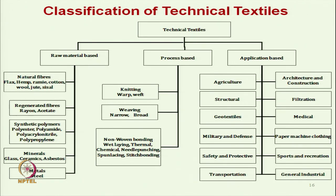Coming to the classification of technical textiles — broadly they are classified in 3 areas: based on raw material, based on manufacturing process, and based on areas of application. As far as raw materials are concerned, fibres are classified into various classes. Natural fibres include flax, hemp, remy, cotton, wool, and jute. These are the natural fibres used for technical textiles.